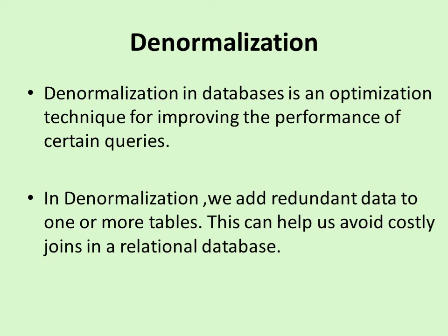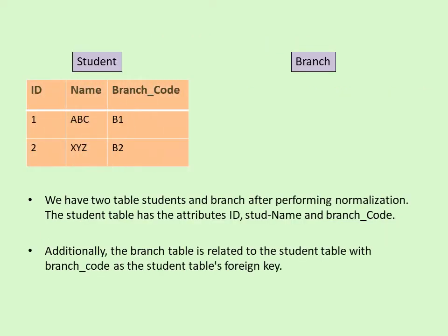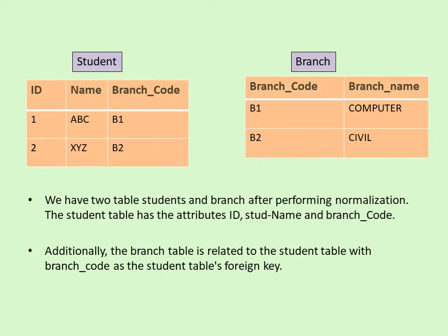It may happen that data redundancy occurs in denormalization. However, this can help us avoid costly joins in relational databases. We will see one example.